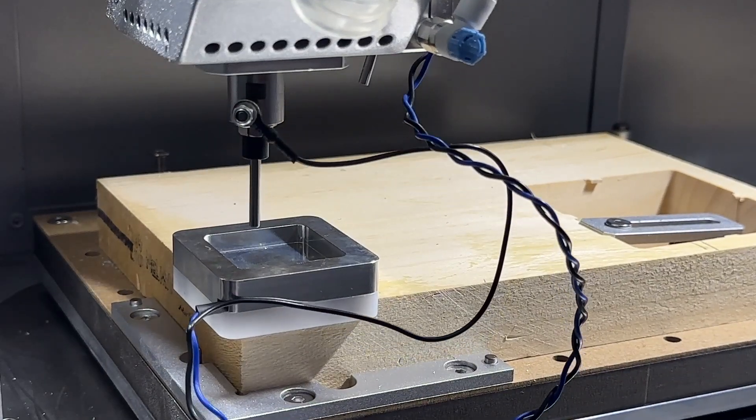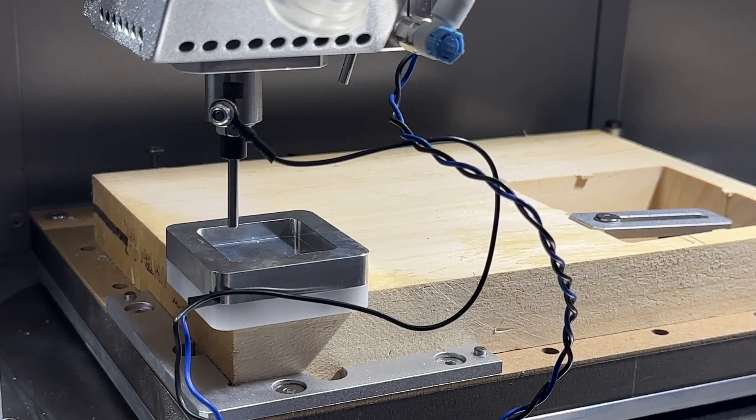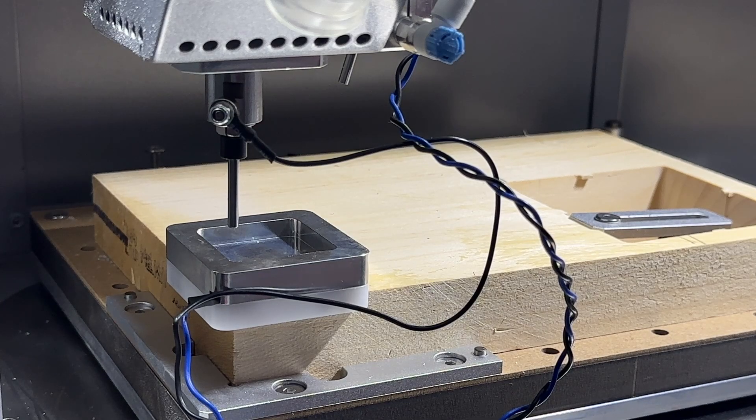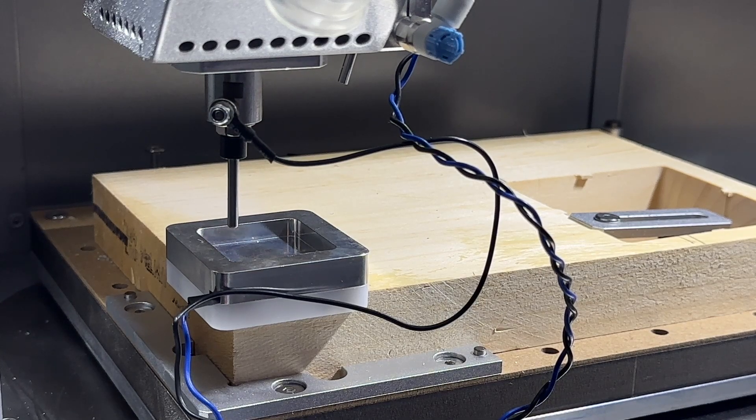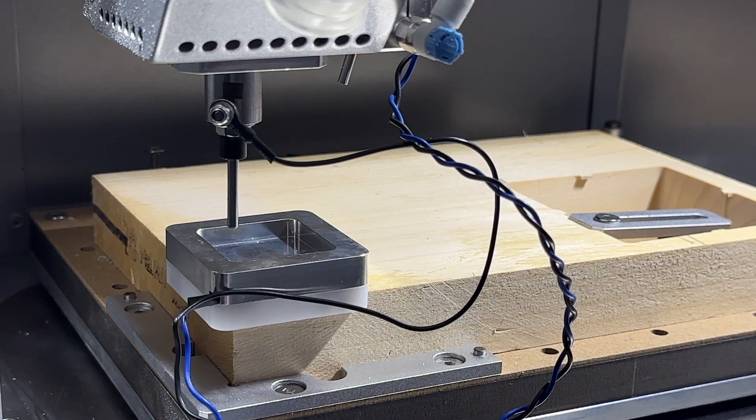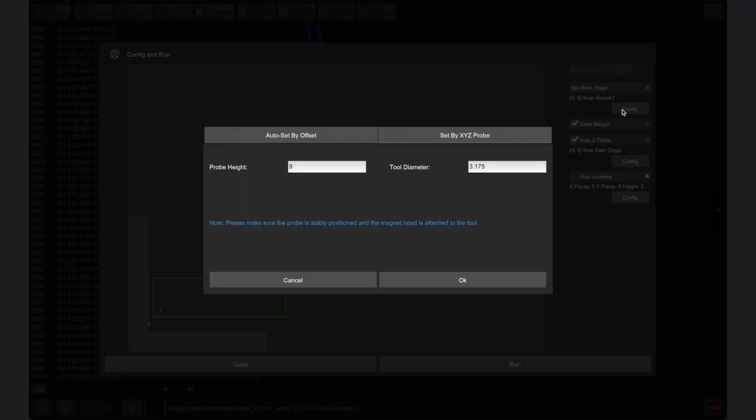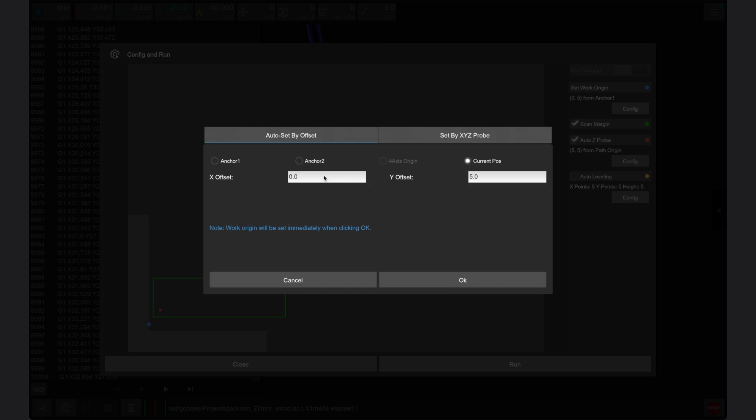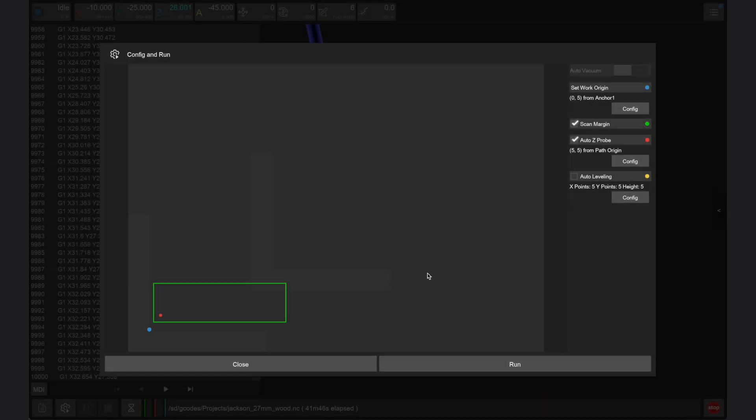But this is easy to do, because when the probe sequence is completed, the Carvera Air's spindle stays at the XYZ position that was recorded during the XYZ probing. In the Carvera controller app, we can then offset based on the current position, because of course that current position is the origin point that was recorded during this manual sequence. This makes setting design offsets easy in the controller app if needed.